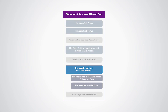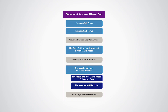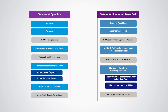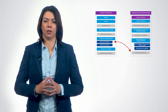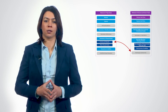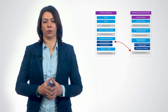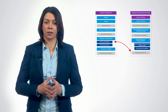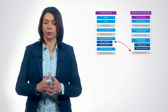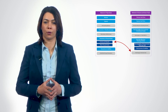Since the statement of sources and uses of cash presents the same categories as the statement of operations, additional useful insights for fiscal analysis can be obtained from evaluating the differences between the two statements. A comparison of the statements can be especially useful to identify those categories where the cash and accrual basis of recording differ significantly, and can also help you decide how to prioritize the collection of accrual data.